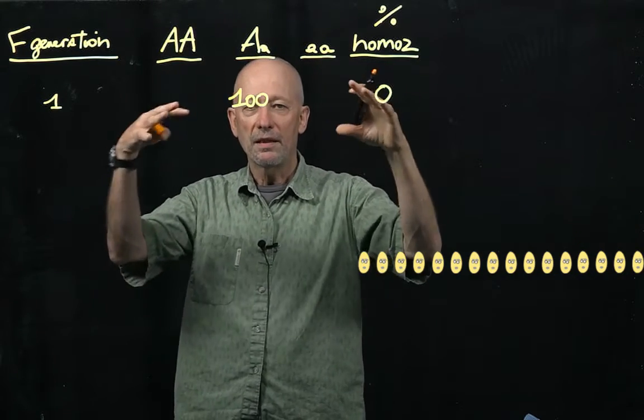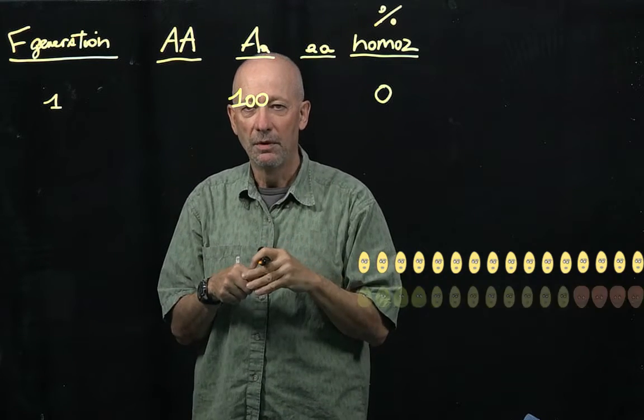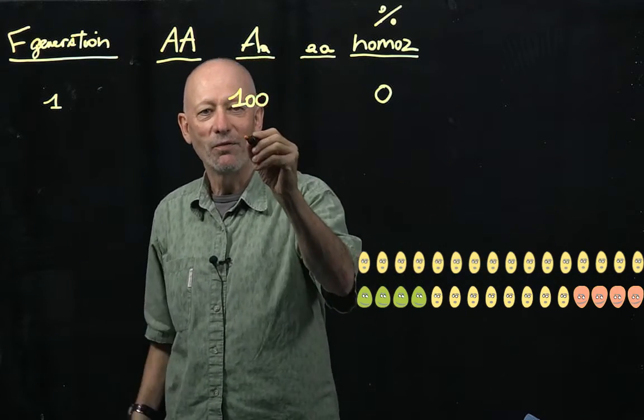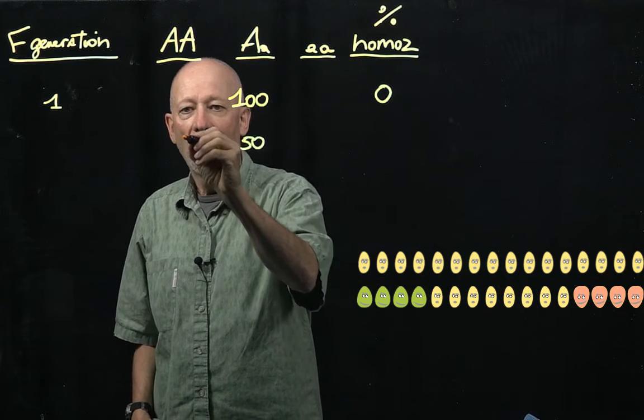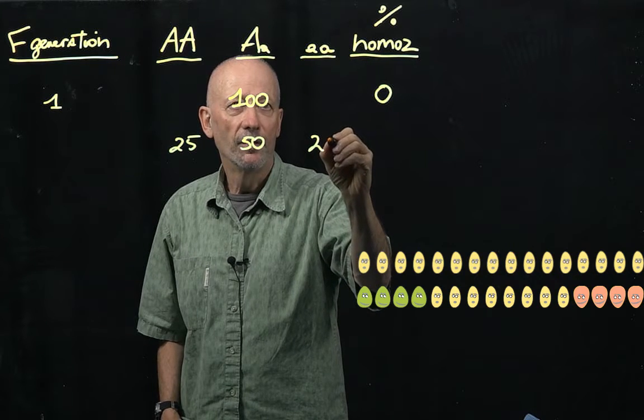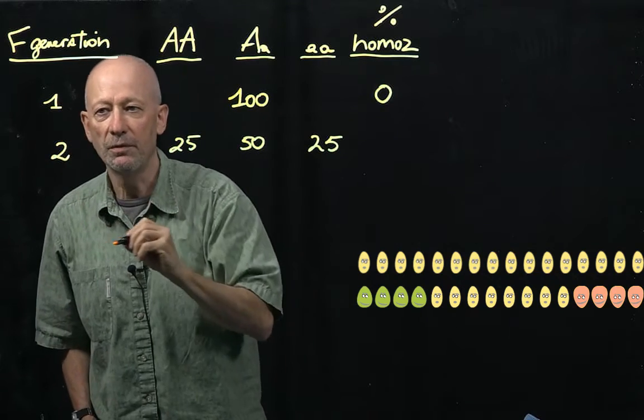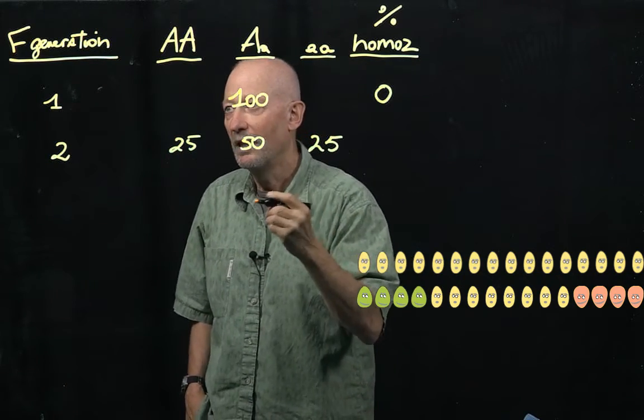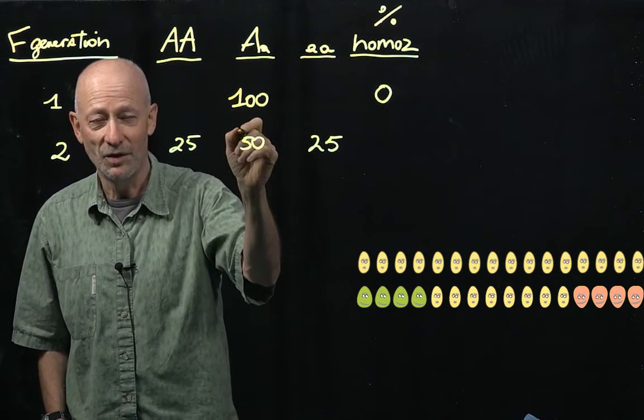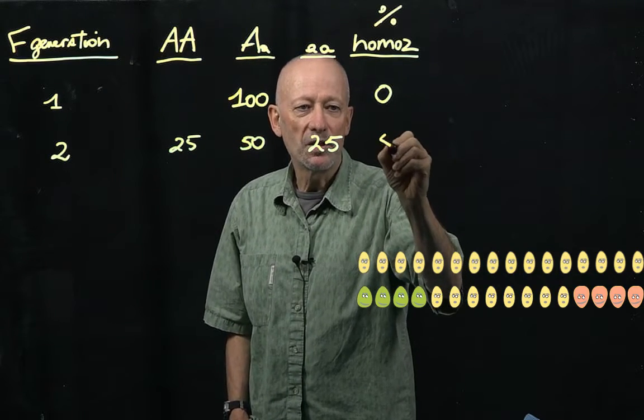If I now let these plants self, and I go to the next generation and sample them, I know that approximately I will get how many big A little a plants? I'll get about 50. I'll get 25 of the big A big A, and 25 of the little a little a. So this is the second generation, F2. And in fact, it's called also the first generation of selfing. We have selfed it for one generation, right? Percent of homozygosity is going to be 50.